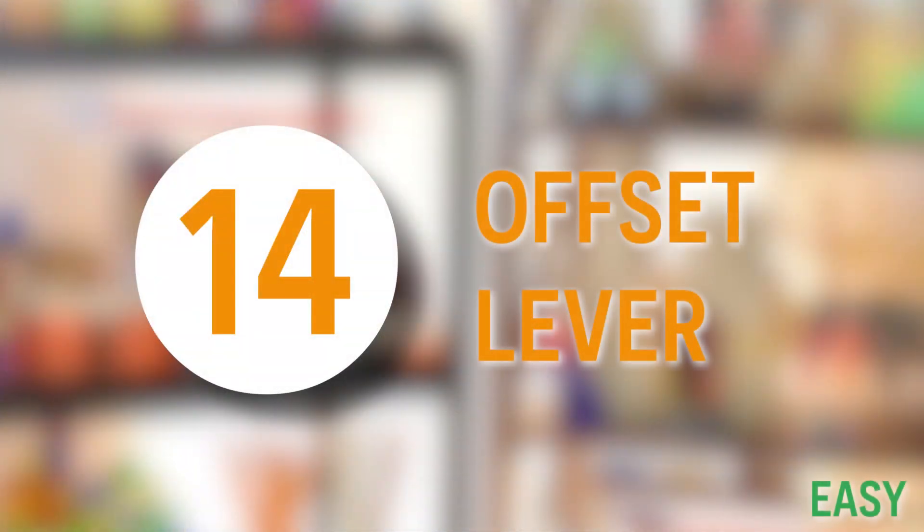Number 14, offset lever. The basic idea of an offset lever is that it's a lever where each of the arms is located at different points along the fulcrum. The offset lever is, I would say, primarily used vertically.